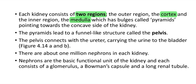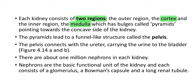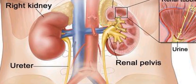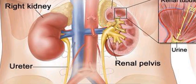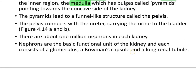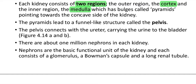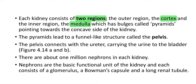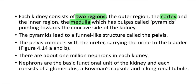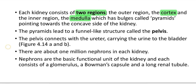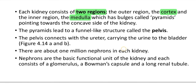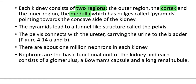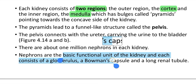The pyramid leads to the renal pelvis. The pelvis is connected with a ureter, carrying the urine to the bladder. There are about 1 million nephrons in each human kidney.